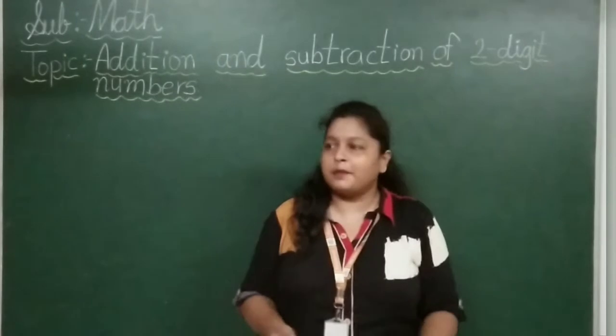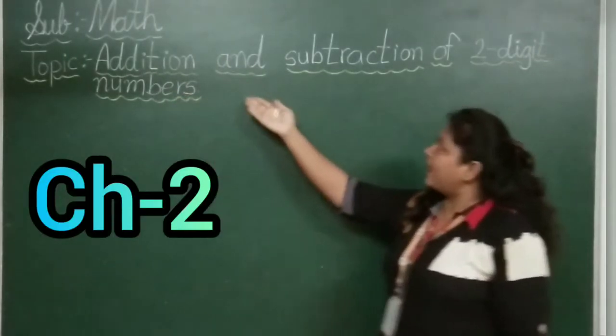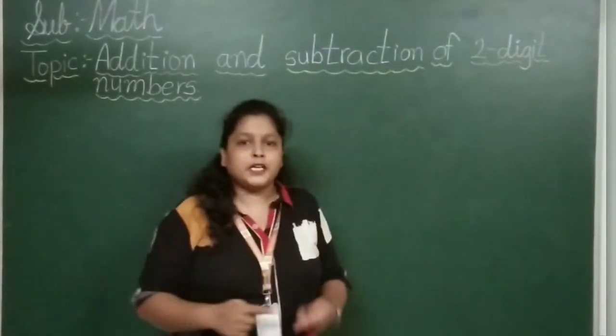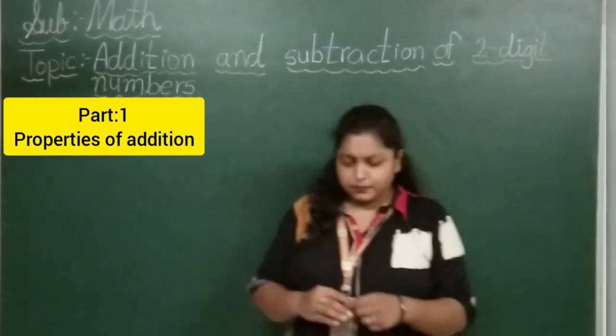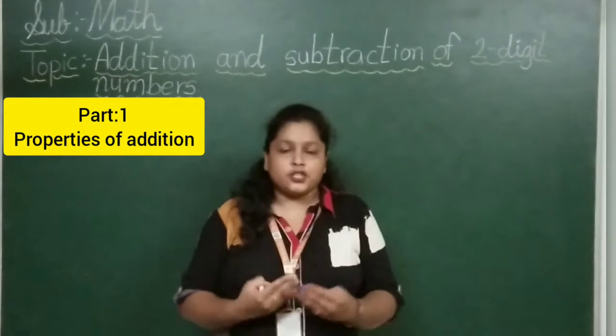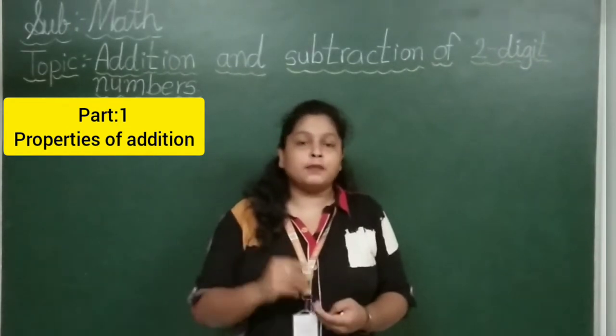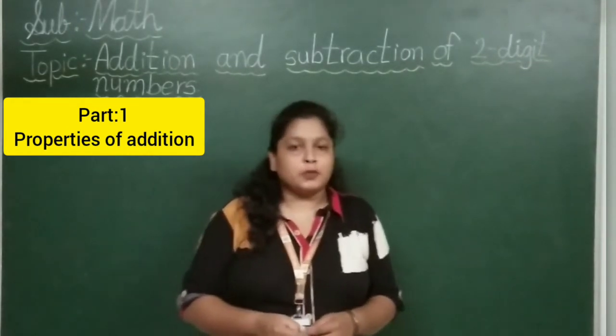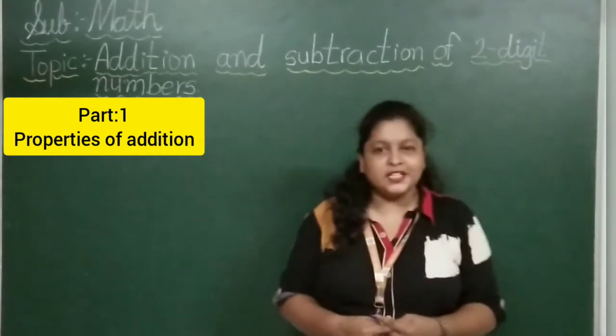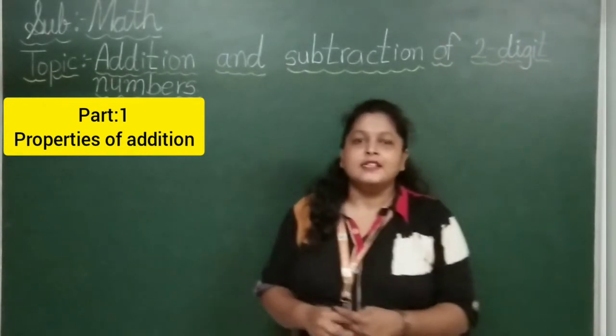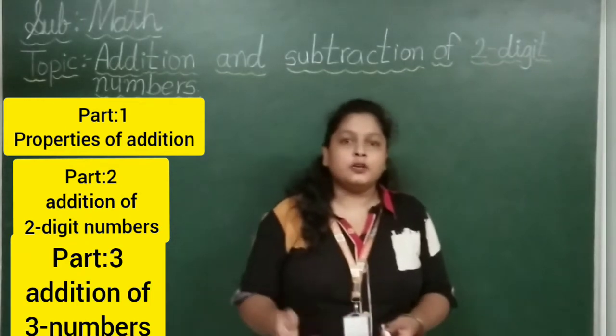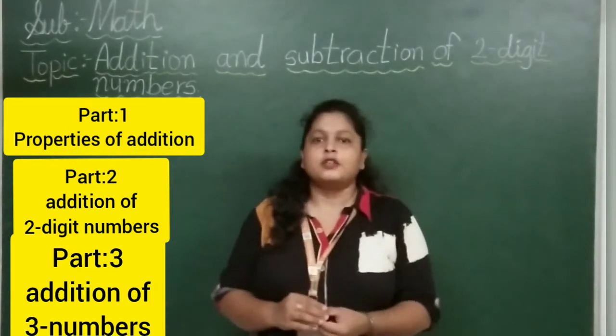We will learn addition and subtraction of two-digit numbers. This is part 1. What did we learn about? We learned about two-digit numbers. First rule, we learned about properties of addition. What did we learn about? We learned about order changes, so answer does not change.